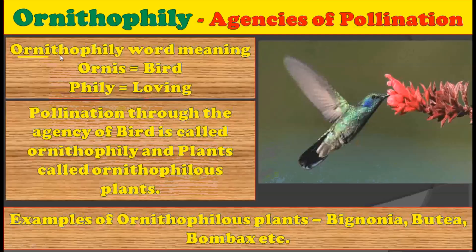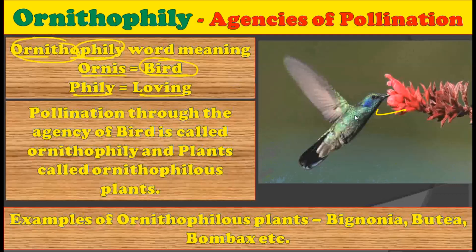Let's consider what is the meaning of the word ornithophily. This word is made up of two words: ornitho and phily. Ornitho stands for bird and phily stands for loving. Those plants which are pollinated by using birds are called ornithophily plants — those plants which have flowers that attract birds by providing nectar and in the process get pollinated. Such plants are called bird-loving plants.